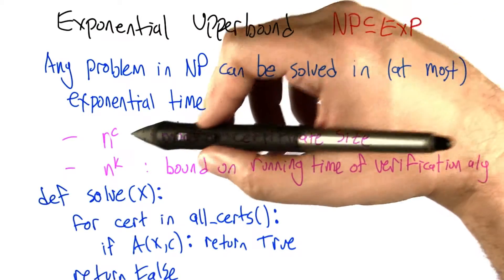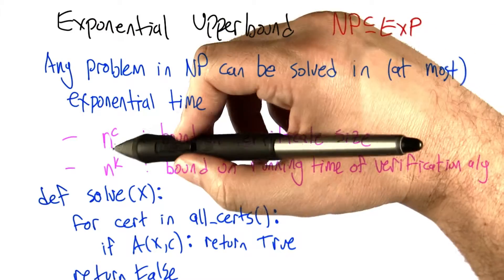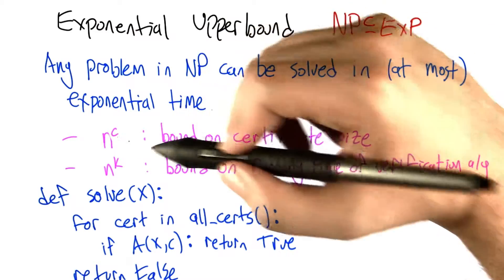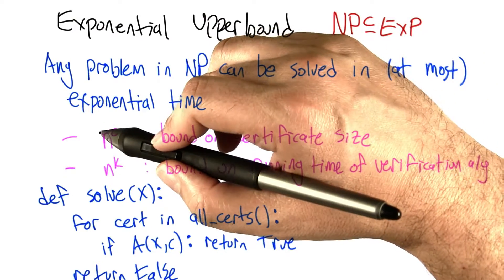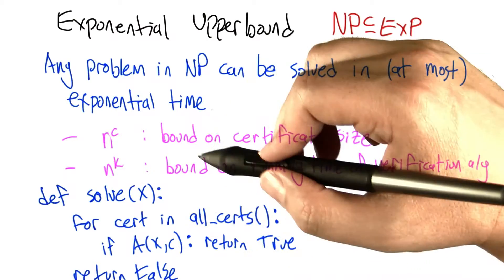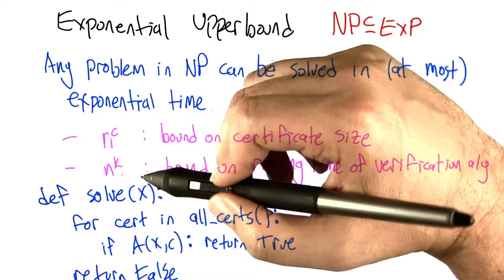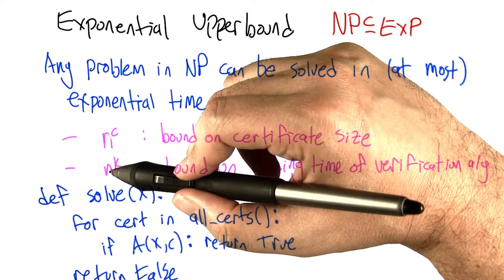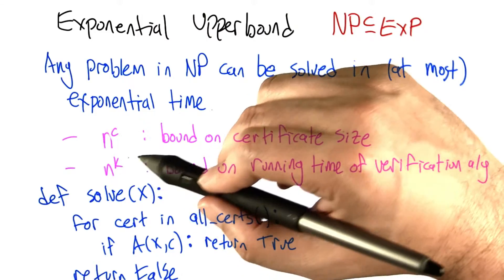If a problem is in NP, that means there's a bound on the size of the certificate needed, say it's polynomial n^c for some constant c that's specific to this problem, where n is related to the size of the input. There's also a bound on the running time of the verification algorithm like n^k, where again n is related to the size of the input, and k is some constant that can depend on the problem but can't depend on the input.